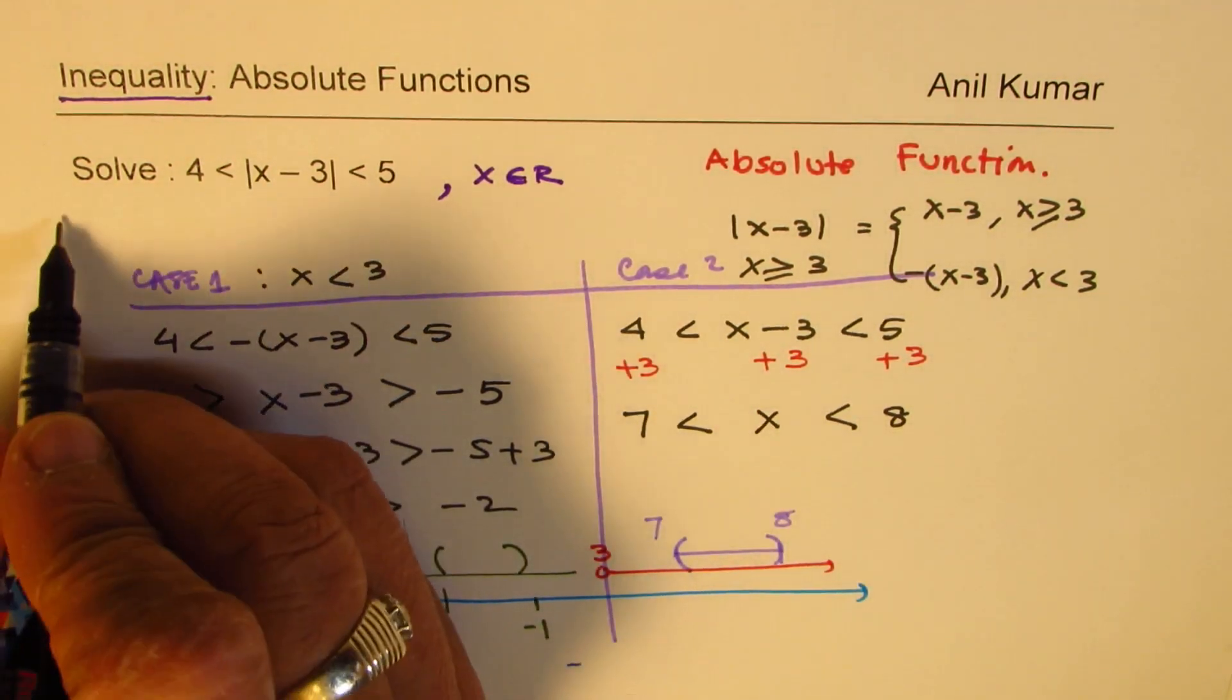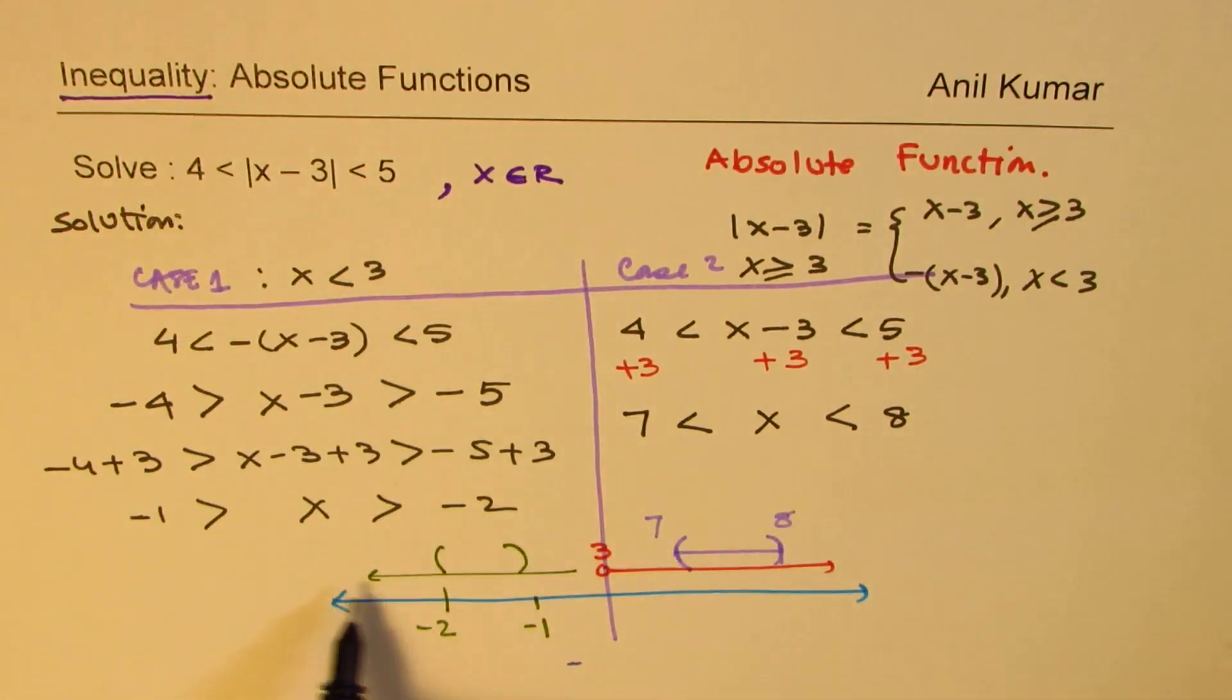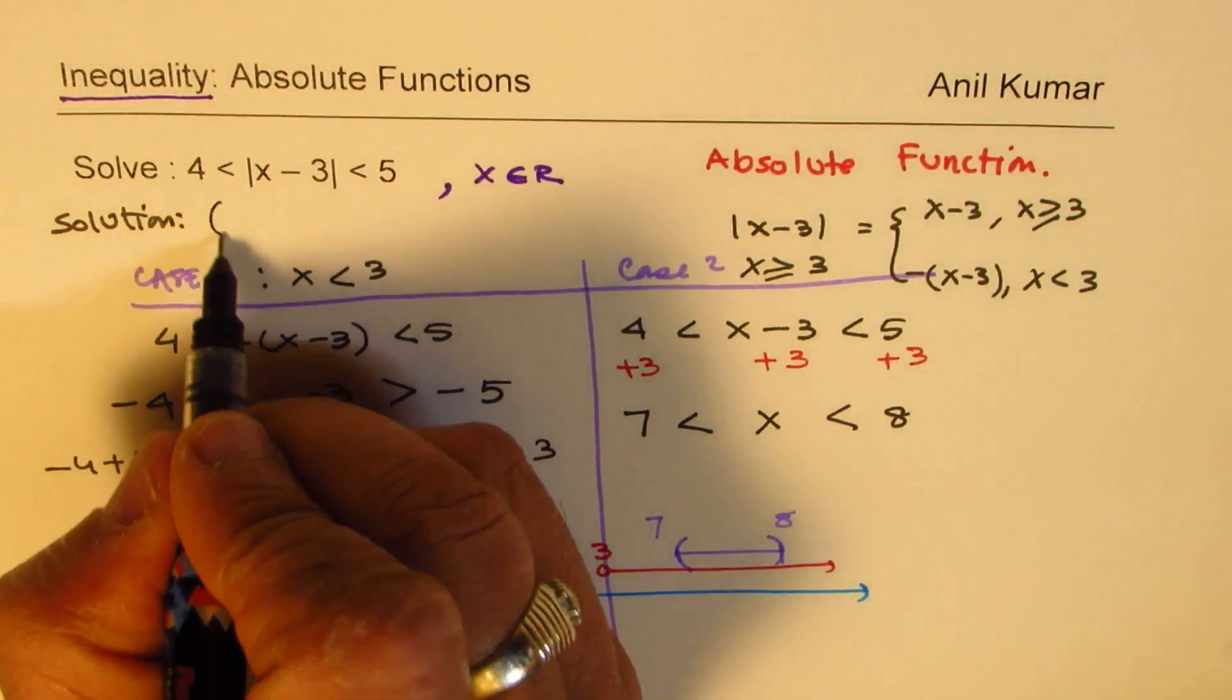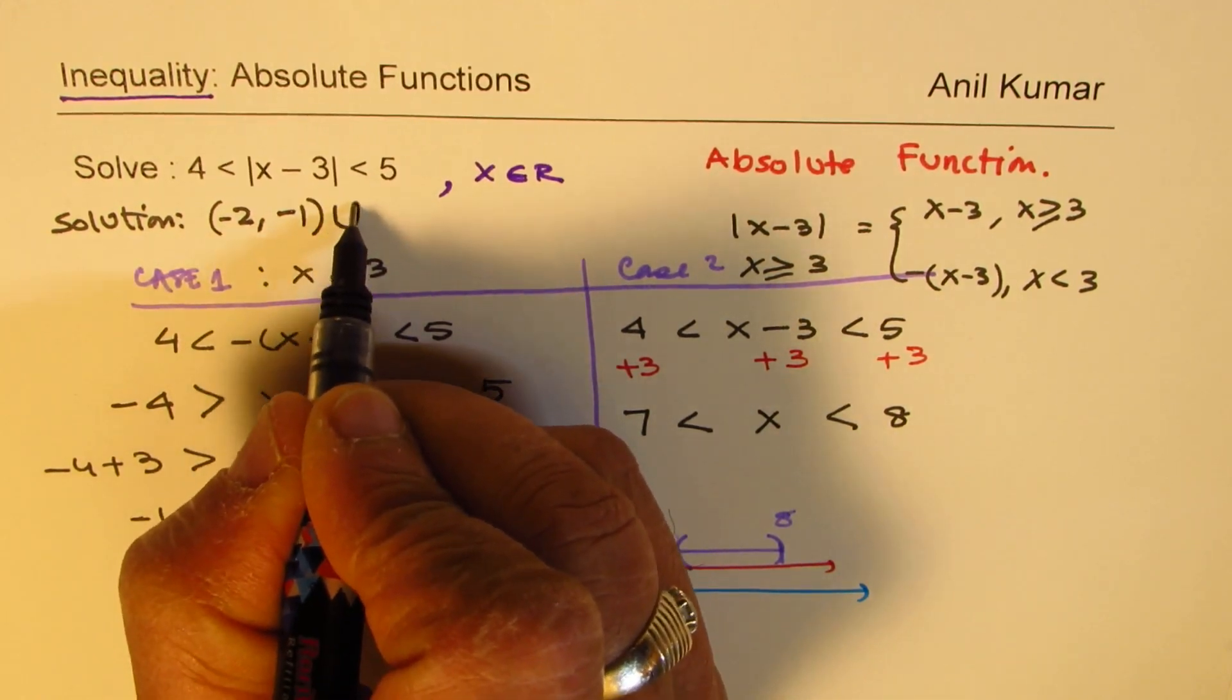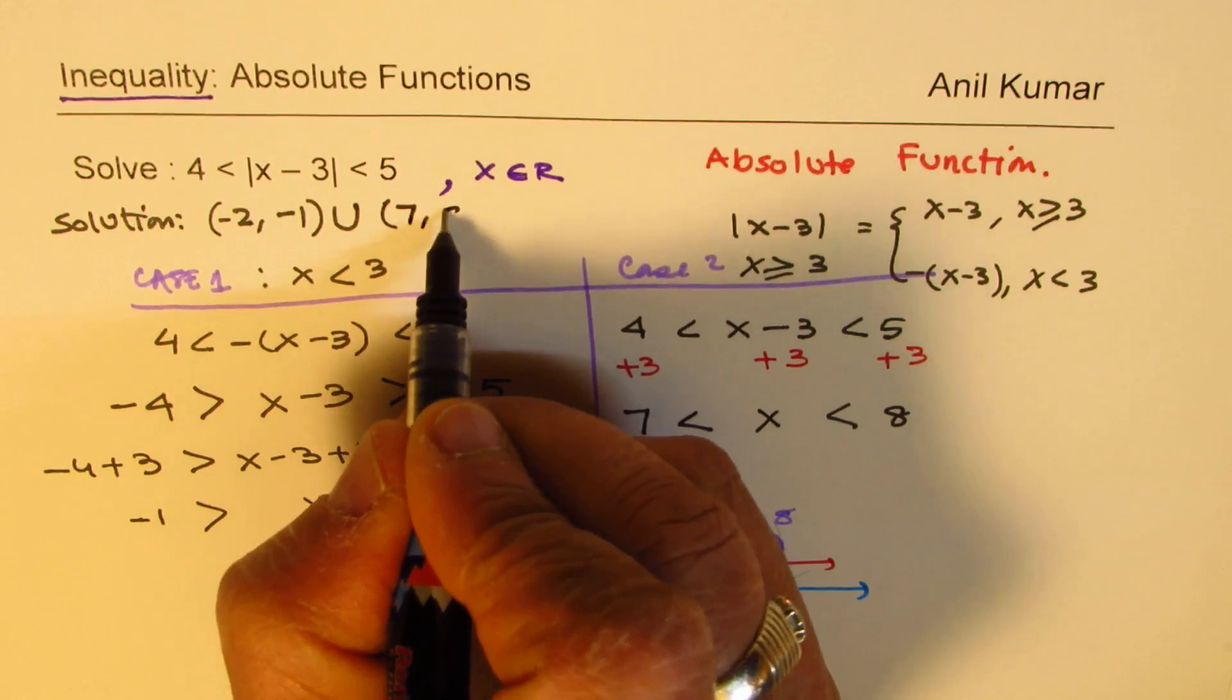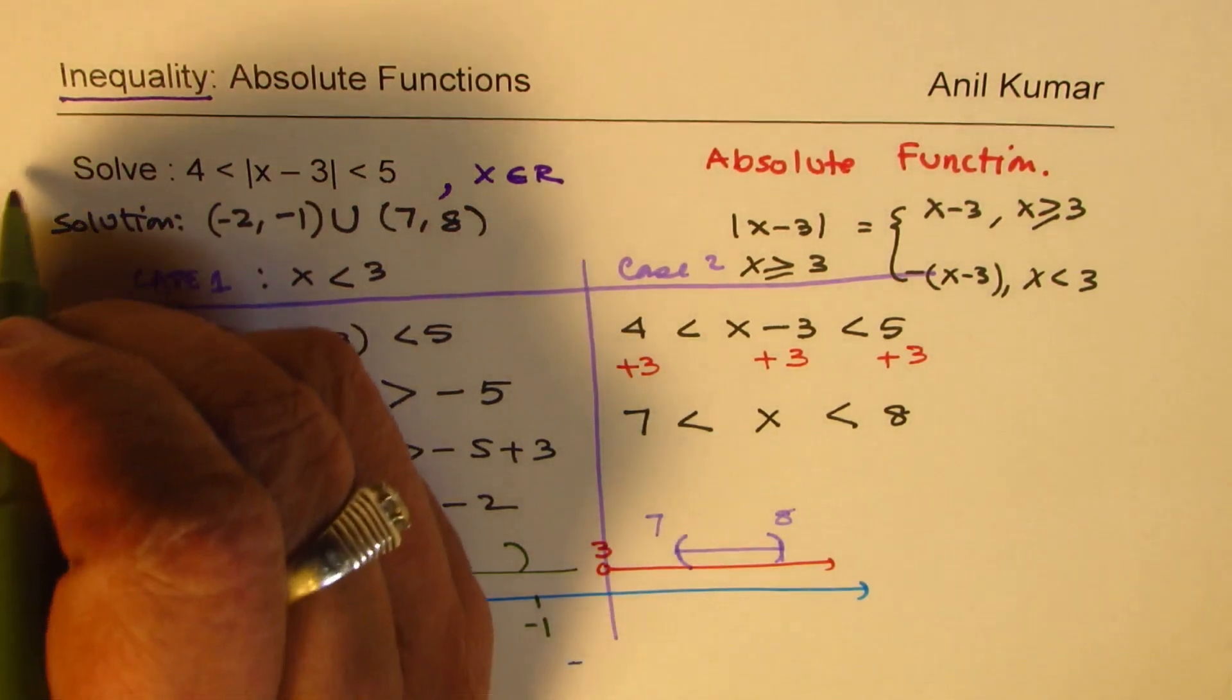The solution is between minus 2 and minus 1, both not included, union 7 to 8. So that is how we are going to solve this particular question.